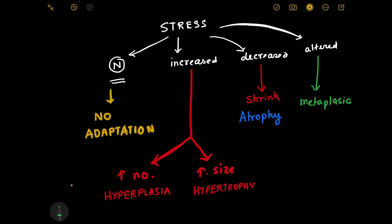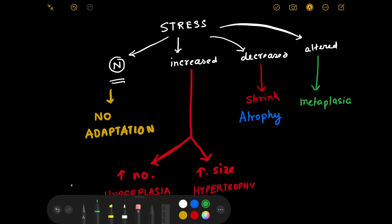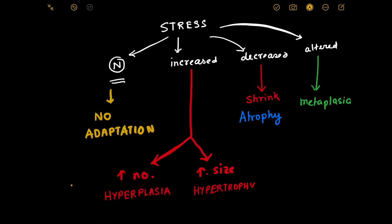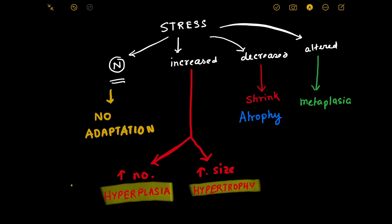So these are the various methods of cell adaptation. One is hyperplasia, another is hypertrophy, third is atrophy, and finally there is metaplasia. These are the four different strategies which are applied by certain cells when they face differences in stress.